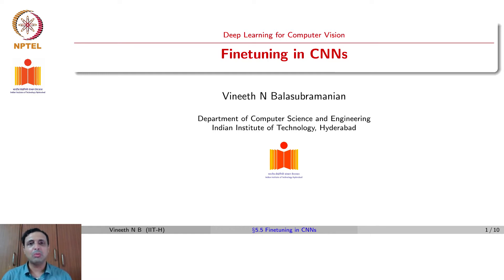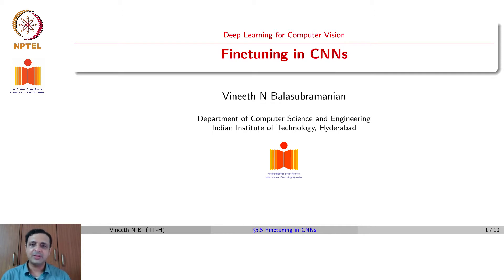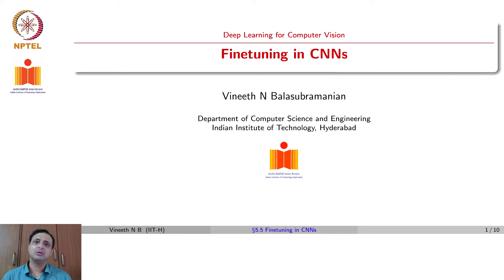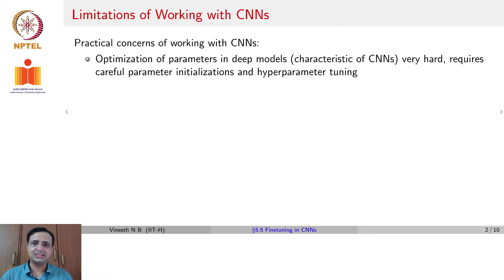In this lecture, we will talk about an important aspect of CNNs that allows us to design architectures for newer tasks or newer domains, given an architecture that works on a particular domain. For example, if we know AlexNet works on the ImageNet dataset, how can we leverage that knowledge to develop a model for another domain or another task? To discuss this, let us start with the limitations of CNNs themselves.